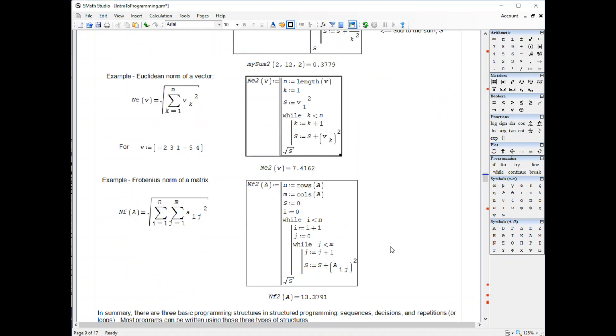For a Frobenius norm of a matrix, you have a while statement. This is the body of the while, and in that body, you have another while. This is a couple of while statements that are nested, and you have to initialize the j, which is the interior index, every time that you go into the while statement.